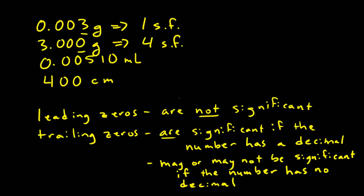Moving on to 0.00510 milliliters, we start counting with the first non-zero digit, and we wind up with one, two, three significant figures.